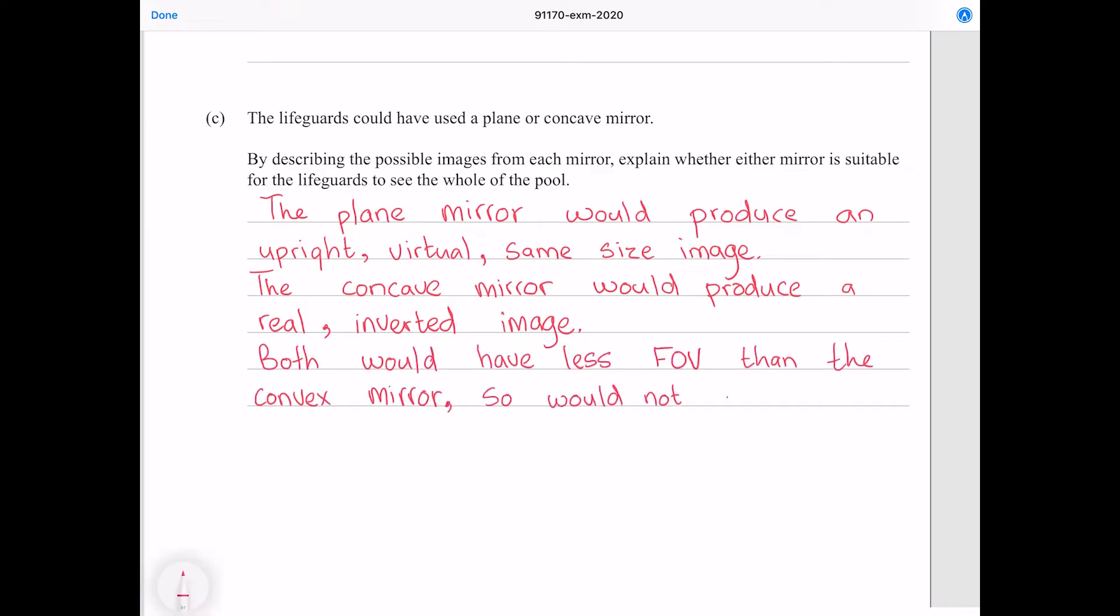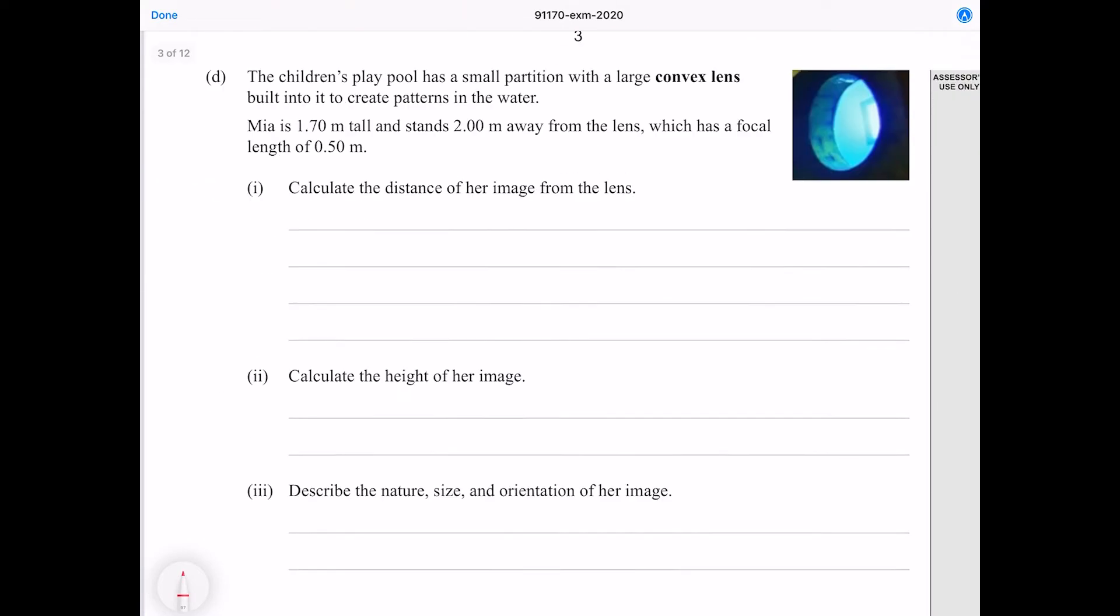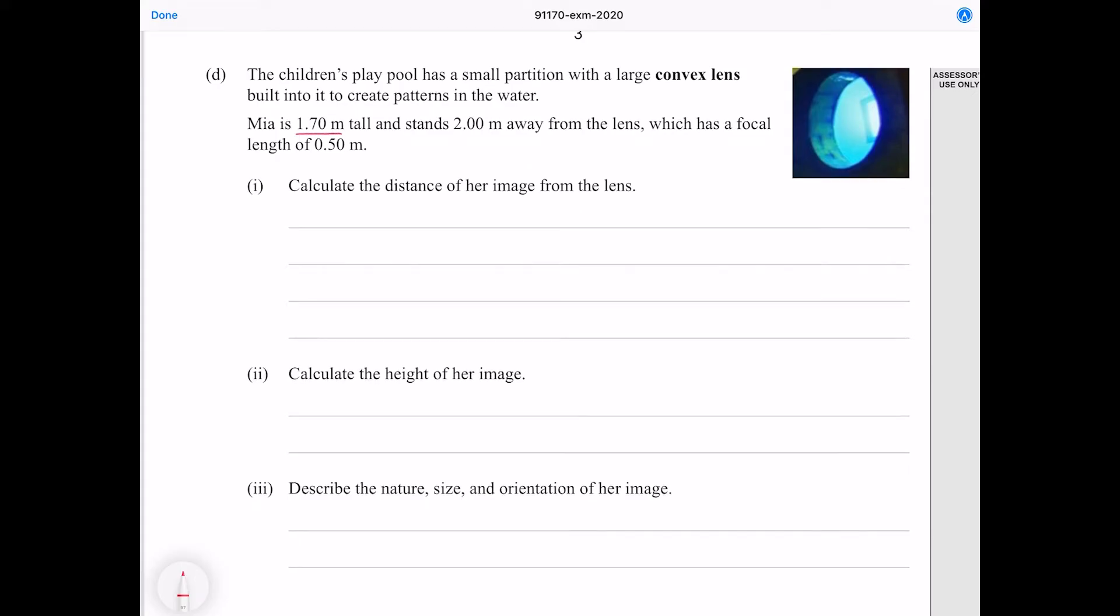The children's play pool has a small partition with a large convex lens built into it to create patterns in the water. Mia is 1.7 meters tall and stands 2 meters away from the lens which has a focal length of 0.5 meters. Calculate the distance of her image from the lens.